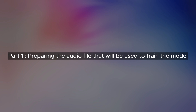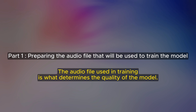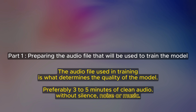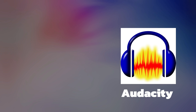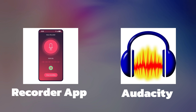First, preparing the audio file used to train the model. The audio file used in training is what determines the quality of the model. Preferably three to five minutes of clean audio without silence, noise or music. In this tutorial, I will clone my own voice and create a model that can sing or speak any language. You can record an audio file on your computer using Audacity, or record on your mobile phone and transfer it to your computer.